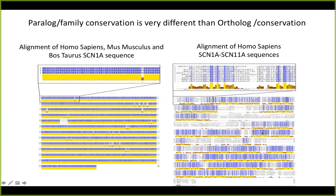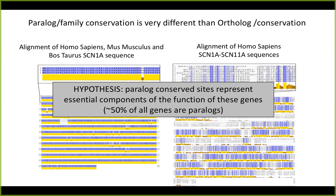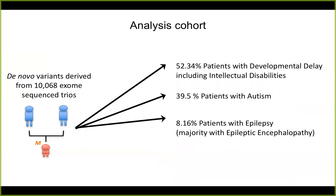We will also find sites which are extremely conserved. The question is whether the sites which are conserved are more functionally important. If there is such a pattern, this would allow us to increase power in gene discovery, but also to help interpret individual variants. This is quite interesting because around 50% of all genes present paralogs, and this kind of framework could be used at scale to empirically test if paralog-conserved sites are important.